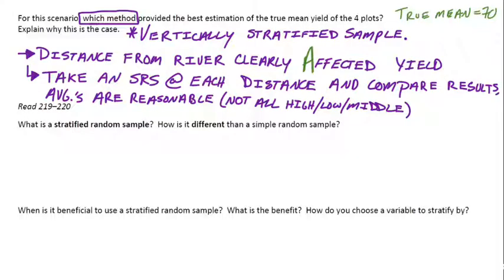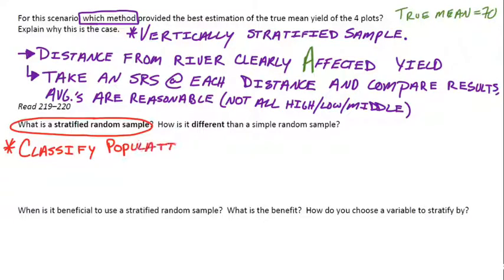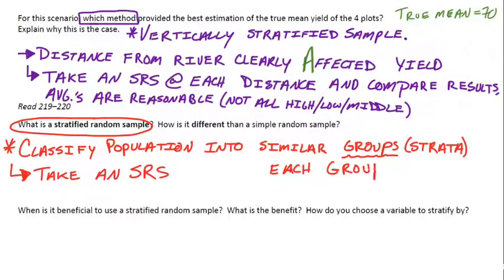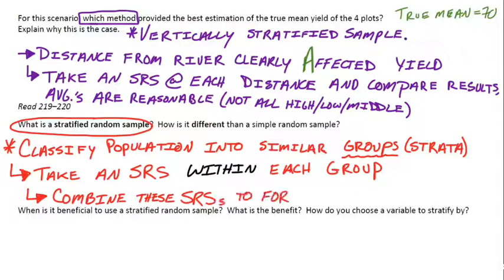To finish these notes off, another really important definition: what is a stratified random sample and how is it different from a simple random sample? A stratified random sample is more specific — we classify the population into groups called strata, and then we sample randomly within each one of those groups. We take an SRS within each specific group, and those results combined give us our overall random sample.